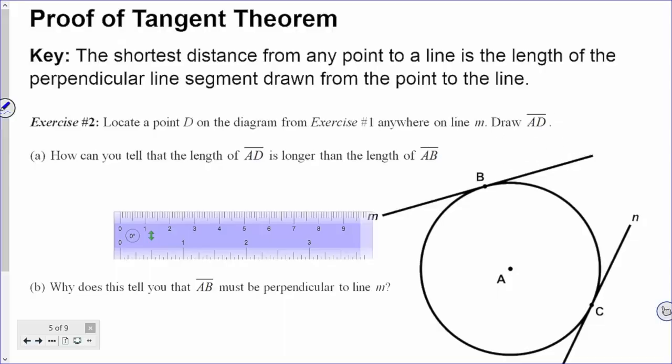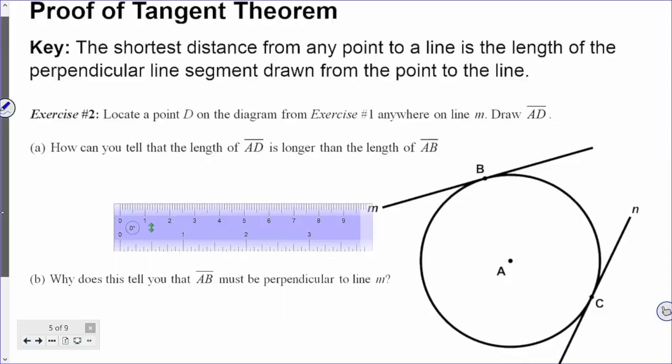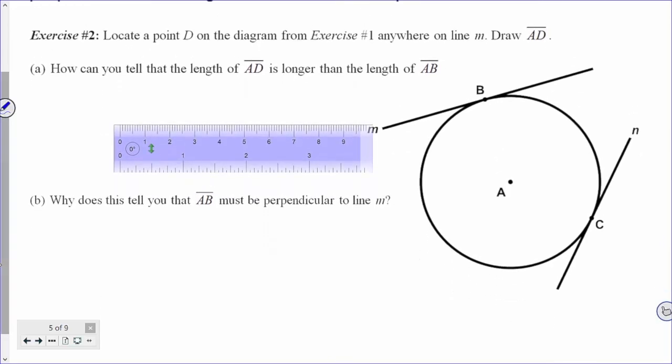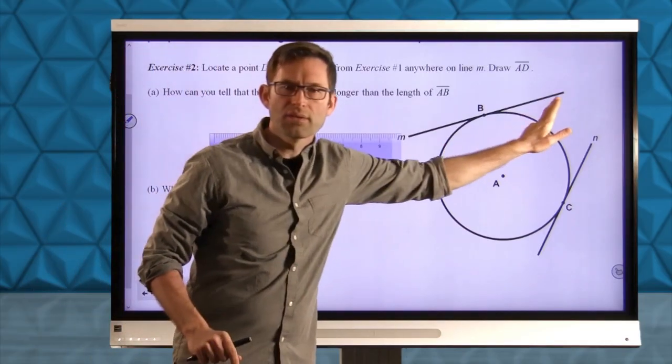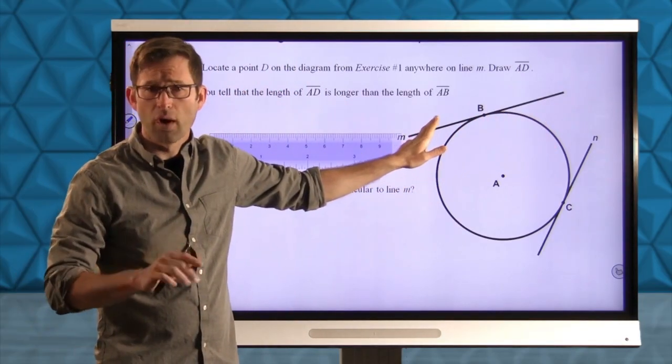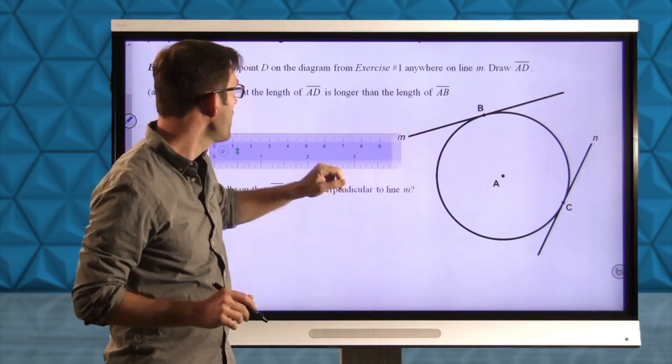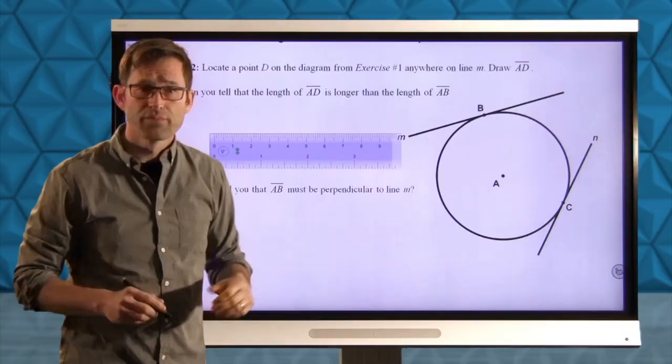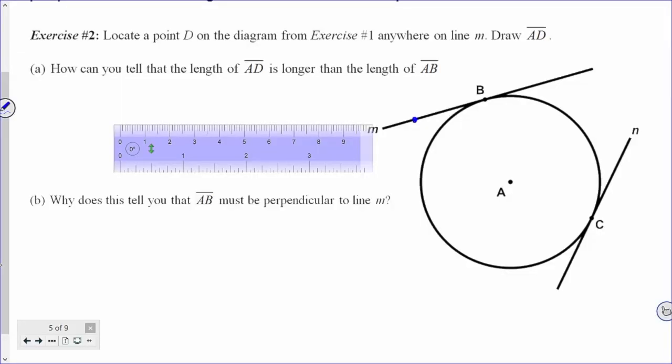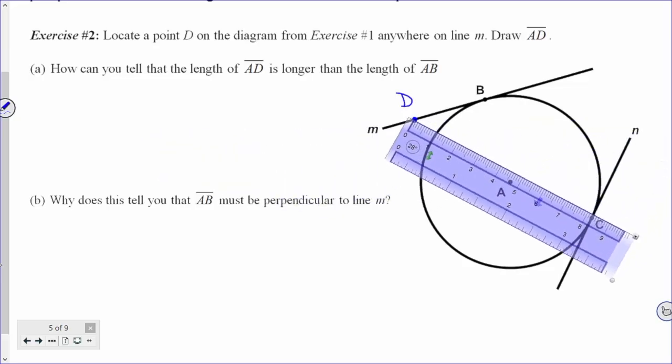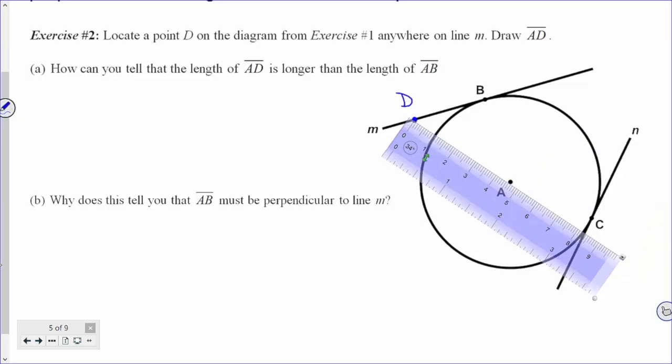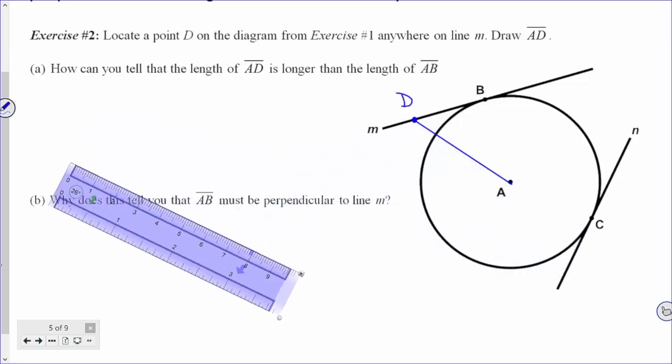Exercise number two. It says locate a point D on the diagram from exercise one anywhere on line M. Anywhere on line M and draw AD. Just don't put it at B. So pick a point somewhere along M, draw a point in, mark it as D, and then draw in AD. I'm going to put it right here, but you put it anywhere you want. And we're going to draw in AD. Easy enough.